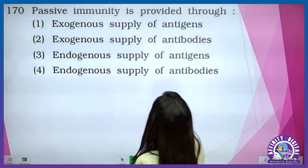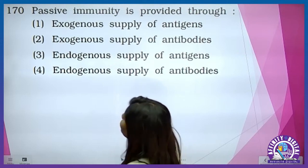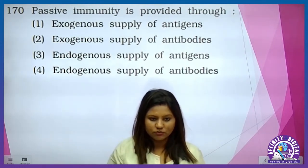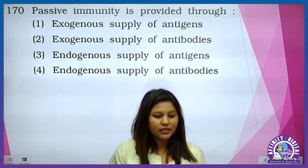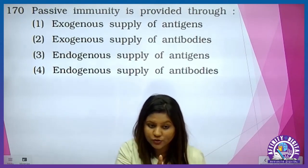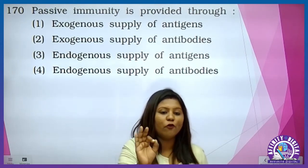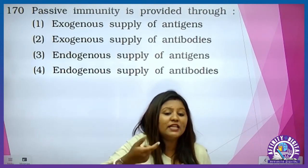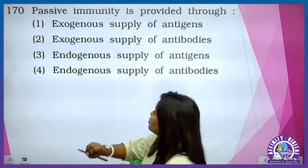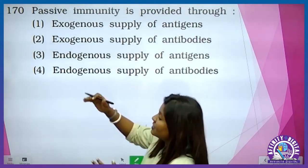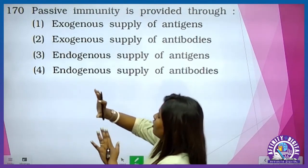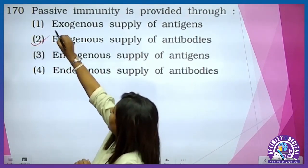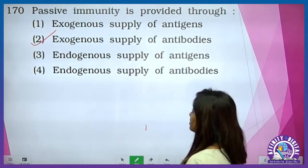Passive immunity is provided through: passive immunity matlab bahar se antibodies ko kisi ke andar dalna. That means preformed antibodies — readymade antibodies. So it is exogenous supply of antibodies.